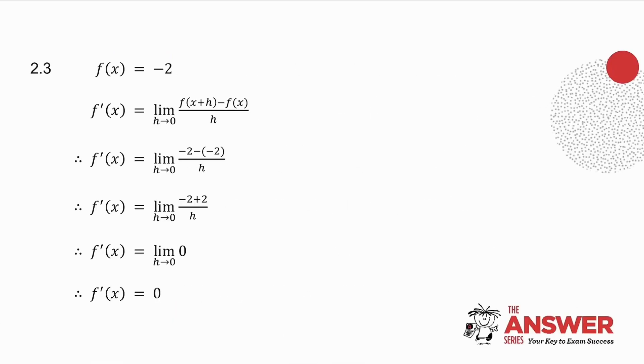In 2.3 I've given you f of x is equal to minus 2. Now f of x plus h means in place of x put x plus h. But there is no x, which means that f of x plus h is just minus 2. And f of x is minus 2. And if I take minus 2 plus 2 divided by h, I get the limit as h tends to 0 of 0. Well if I make h closer and closer and closer to 0, what happens to 0? Well it doesn't matter what h is, 0 is just 0. So my answer is 0.